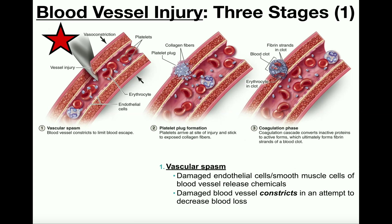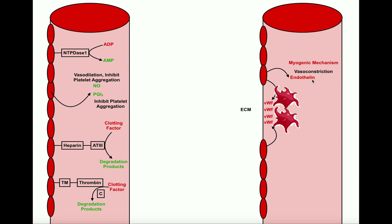In addition to the myogenic mechanism, damaged endothelial cells release chemicals that further vasoconstrict the vessel to prevent blood loss. One of those chemicals is called endothelin. Endothelin binds to smooth muscle receptors and promotes vasoconstriction, really just in areas where there is damage. So we have a myogenic mechanism and endothelin combined — these two things together are called the vascular spasm.